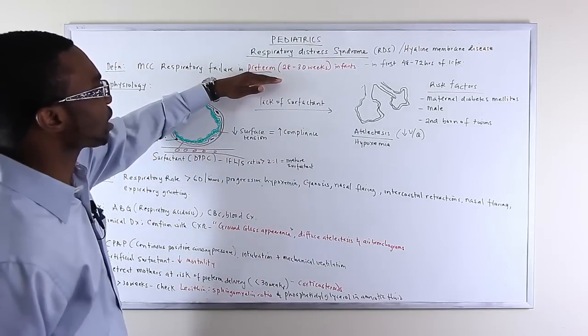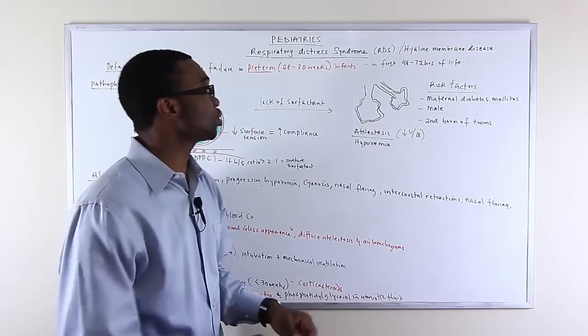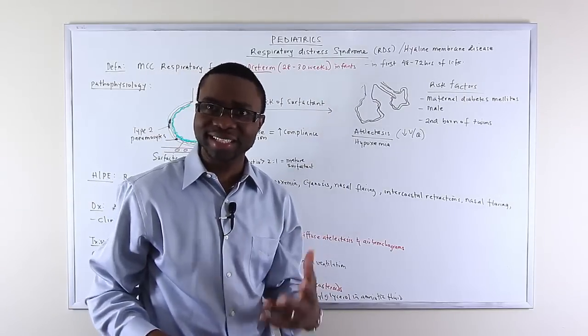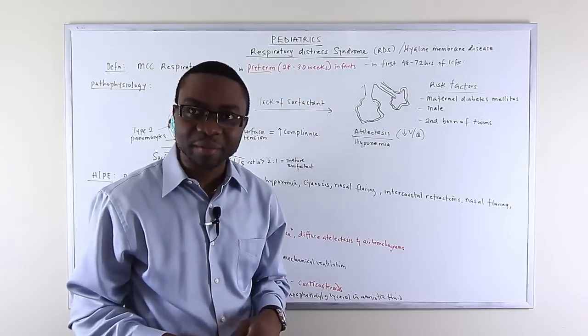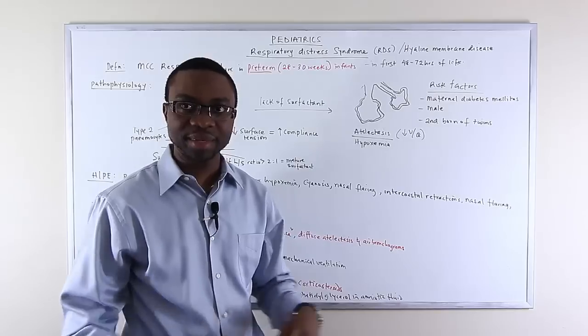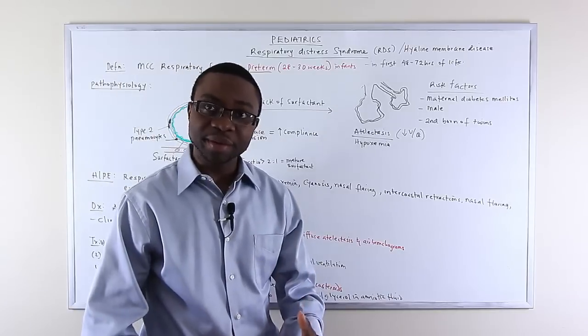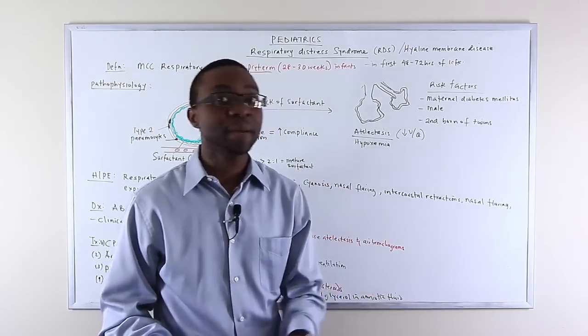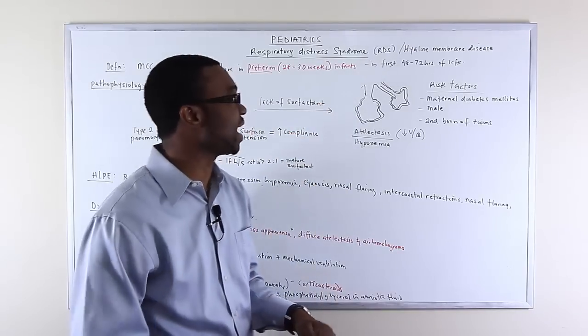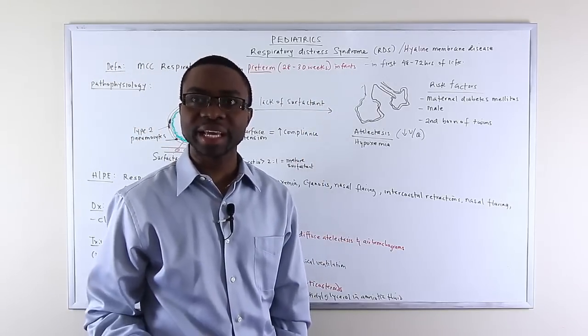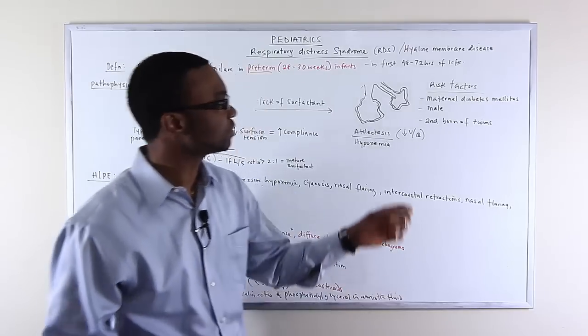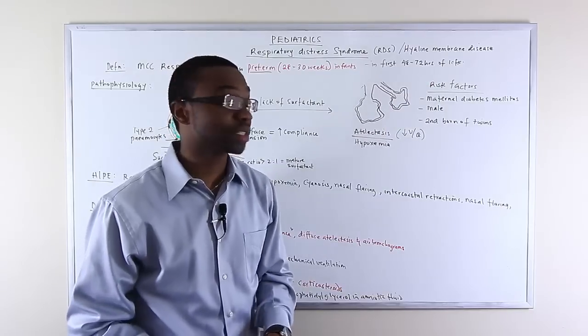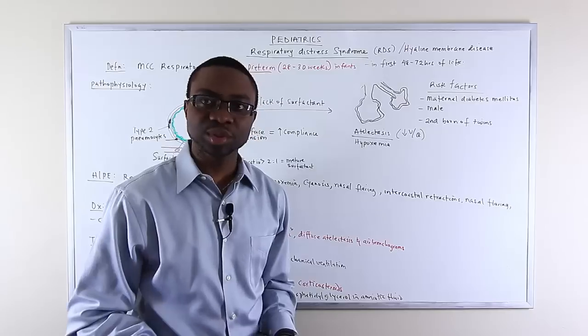This often occurs in preterm infants between 28 to 30 weeks. Normal babies should be born around 37-38 weeks, but if a baby comes out before then, there's going to be some mechanical problems. In this case we're talking about the lungs. If they tell you a 30-week infant was born, you better be thinking respiratory distress syndrome in the first 48 to 72 hours.